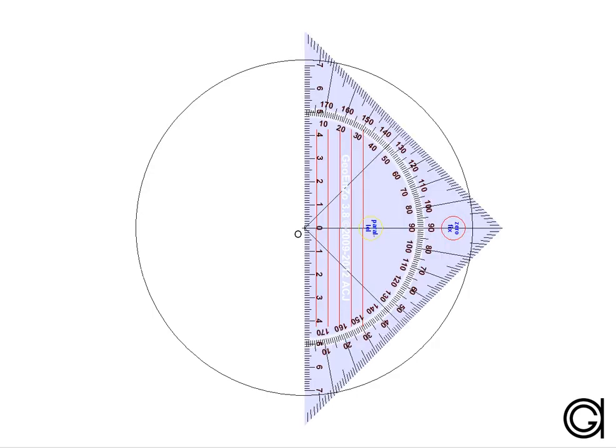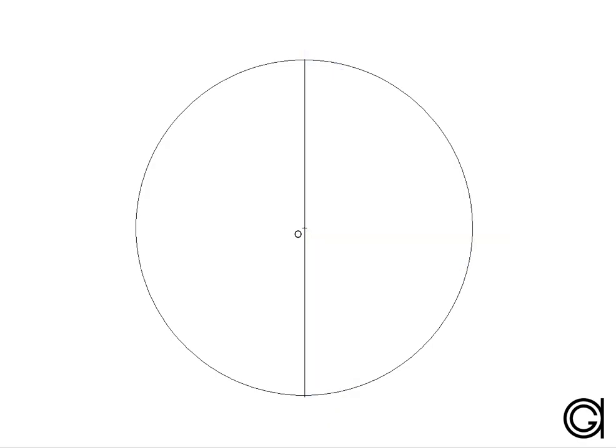As you can see, we have drawn a circle with its center O. The first thing we are going to do is to draw a vertical diameter. This vertical diameter cuts the circle at two points, which we call A and P, as can be seen here in the video.